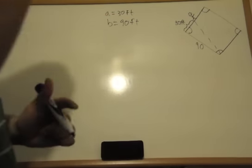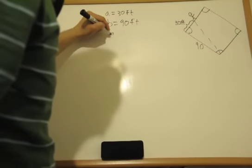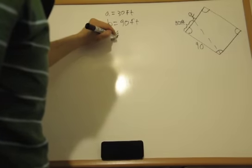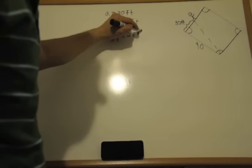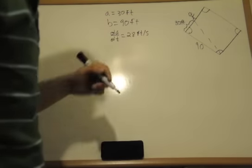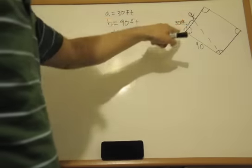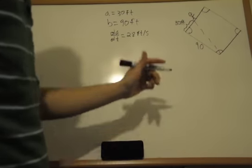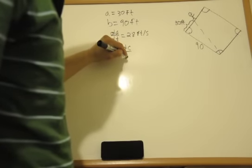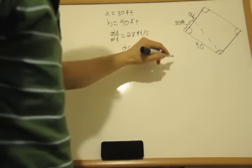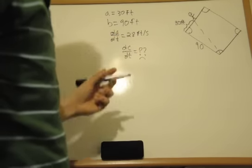B is equal to 90 feet. Now, we're going to say that dA/dt is equal to 28 feet per second, because that's how quickly A is changing with respect to time. And this is A, of course, so he's running to 3rd base. Now, we want to find dC/dt. Okay, we don't know what that is.